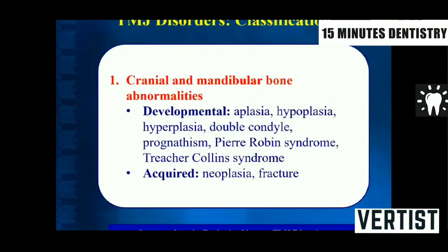The first classification category is abnormalities of the cranial and mandibular bone. There are two types: developmental and acquired. Developmental, like aplasia; acquired, like neoplasia.